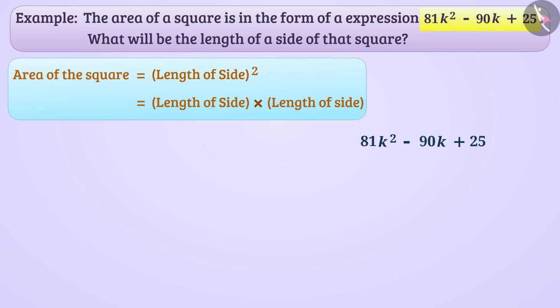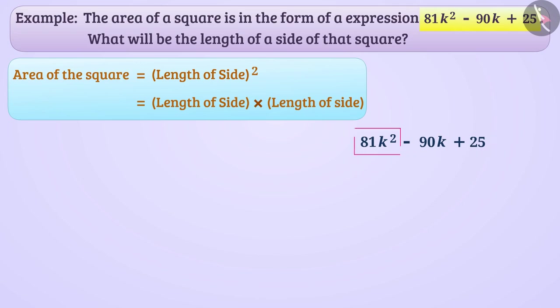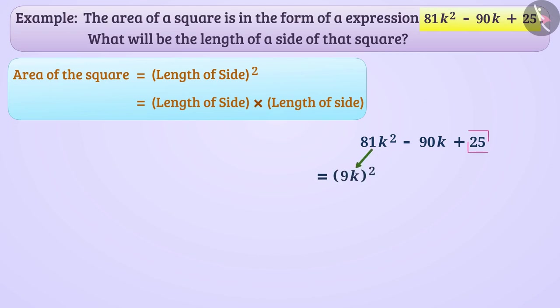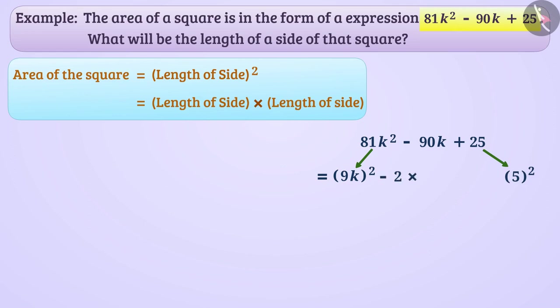First, we will see if there are any common factors in all the terms of the expression. There are no common factors in all the terms. Now let's factorize all the terms. The first term is a perfect square — we can write it as 9k, whole square. The third term is also a perfect square, which we can write as 5 square. The second term can be written as minus 2 multiplied by 9k multiplied by 5.